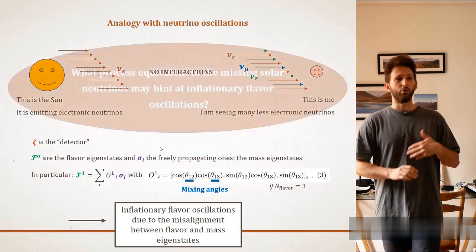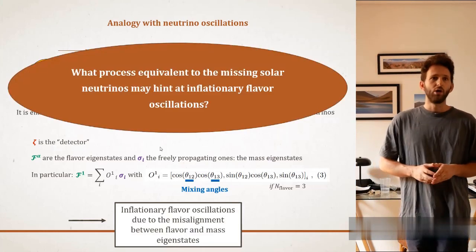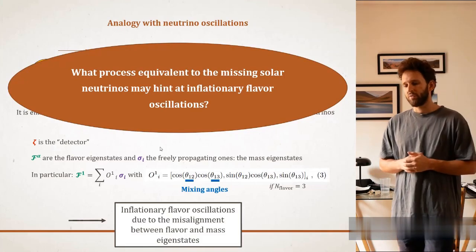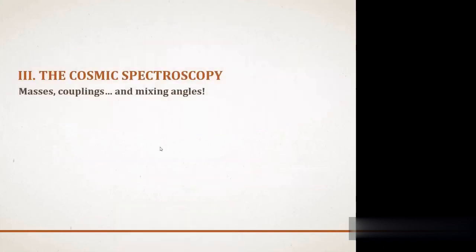Of course, now, the fair question is what process equivalent to the missing solar neutrinos may hint at inflationary flavor oscillations in the cosmological data.